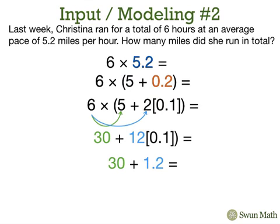Add it together, we get 31.2. So 6 times 5.2 miles per hour is equal to 31.2 miles.